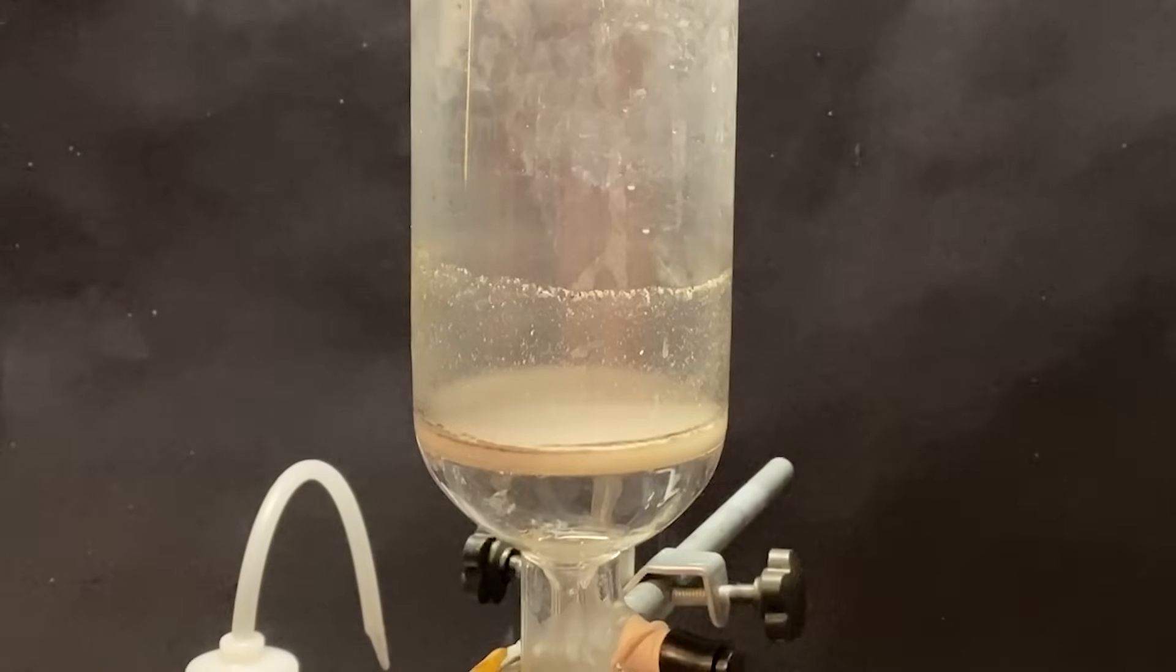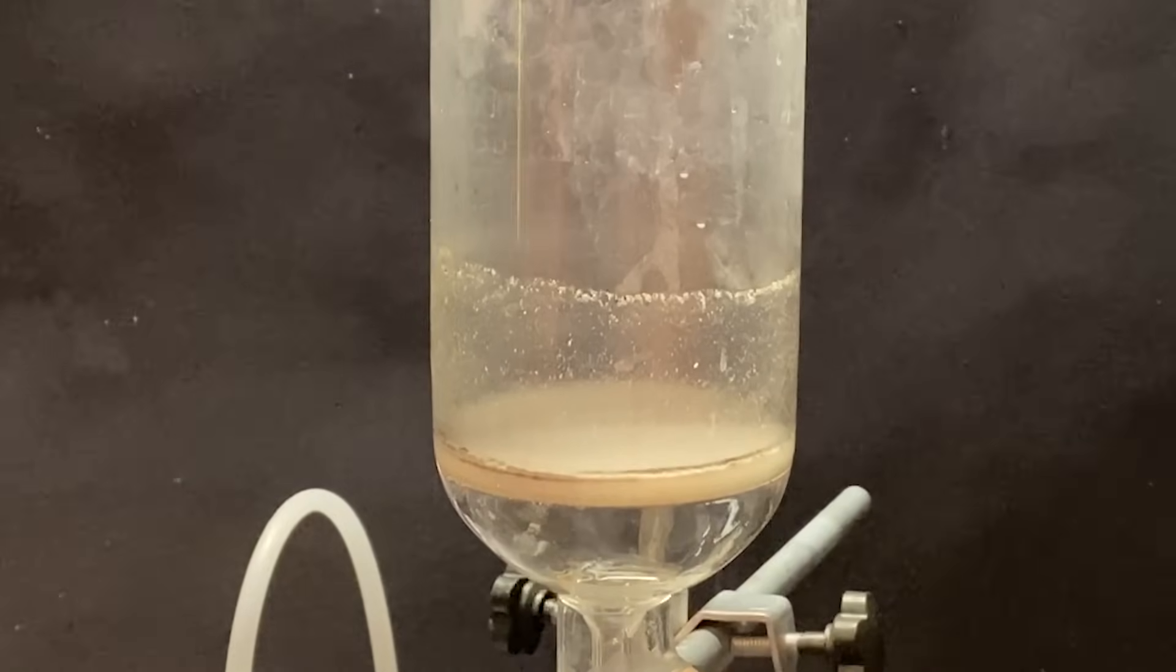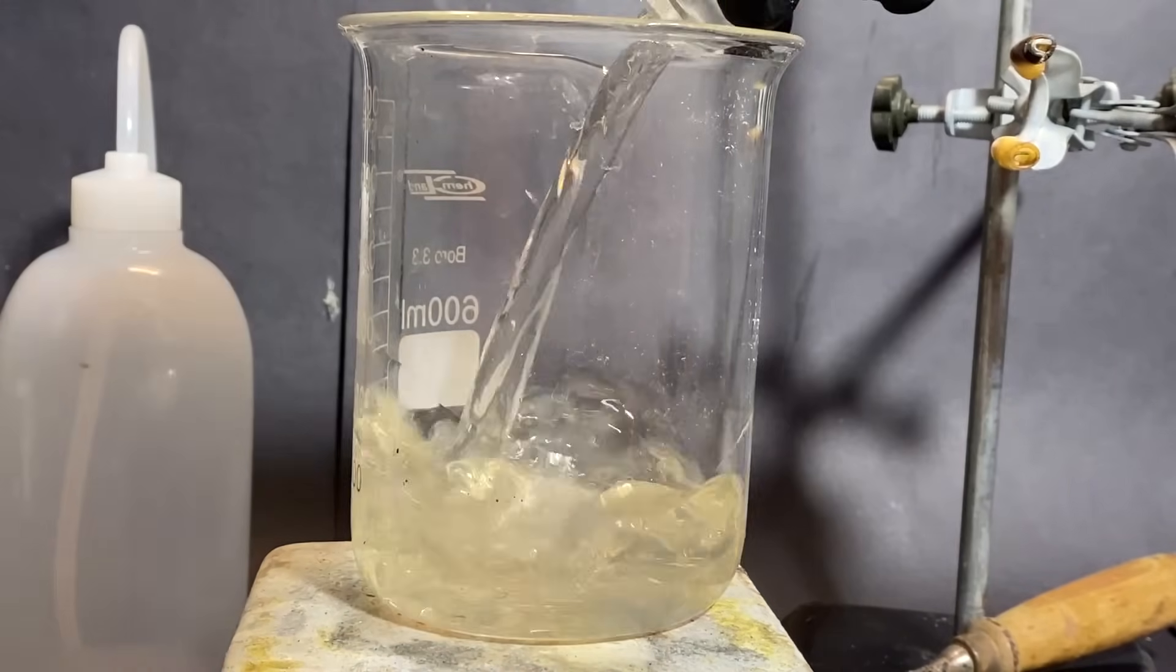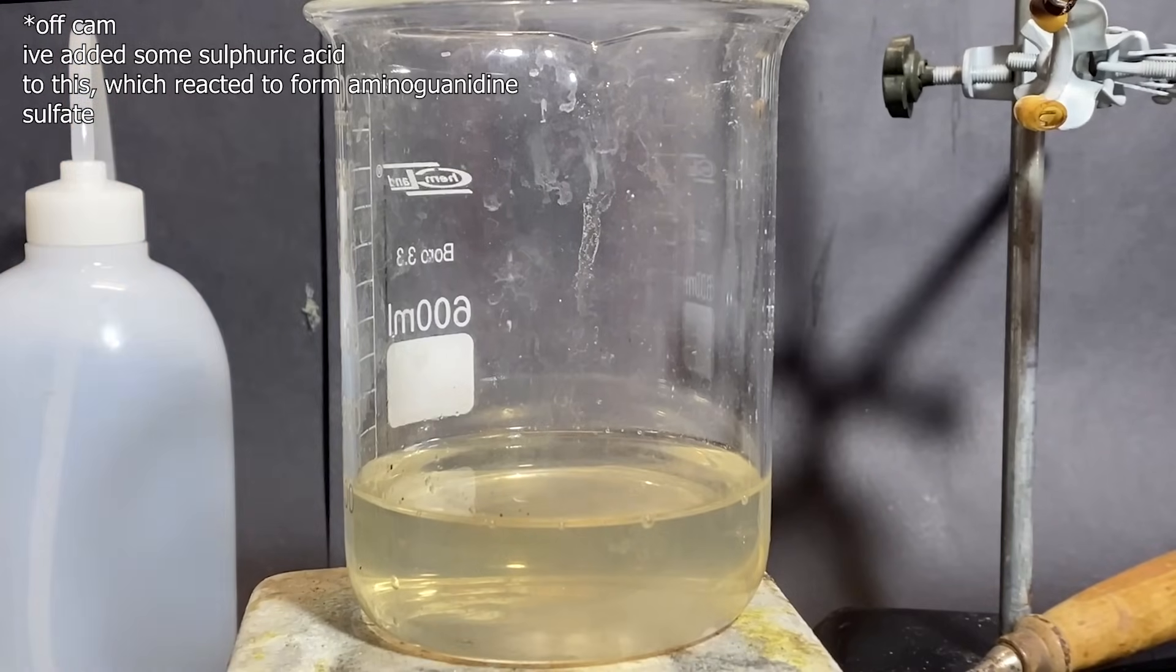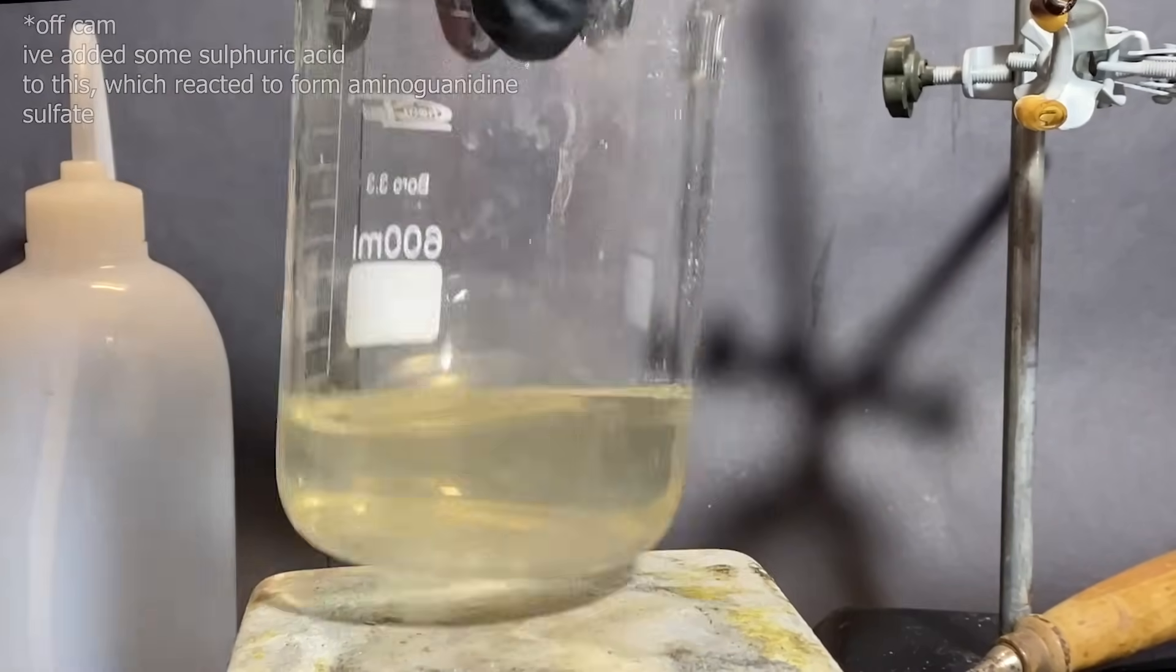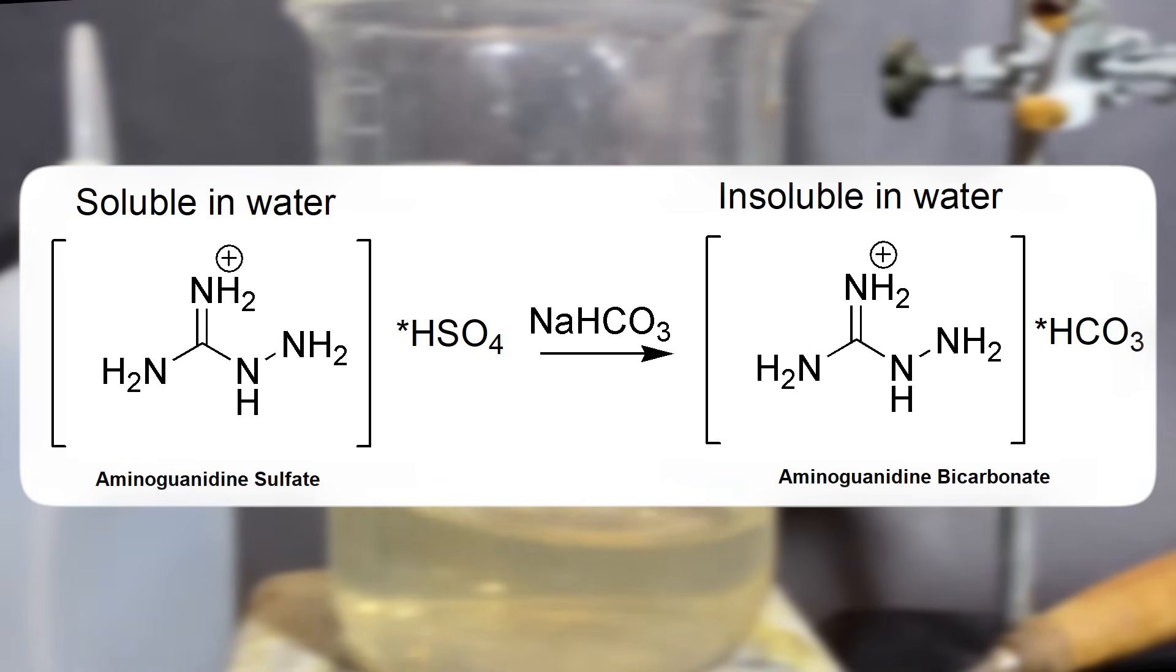Most of the slug in the filter is just calcium sulfate, which had fallen out of the solution, and some dirt I guess. And then I started adding some sodium bicarbonate. This bicarbonate reacts with the newly formed aminoguanidine sulfate and turns it into aminoguanidine bicarbonate, which is not soluble in water.